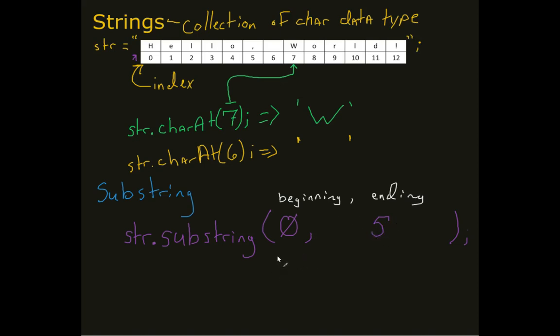So that will give me the character at zero, the character at one, two, three, four, but not including five. So if I were to do a system.out.println, what I would get is hello.